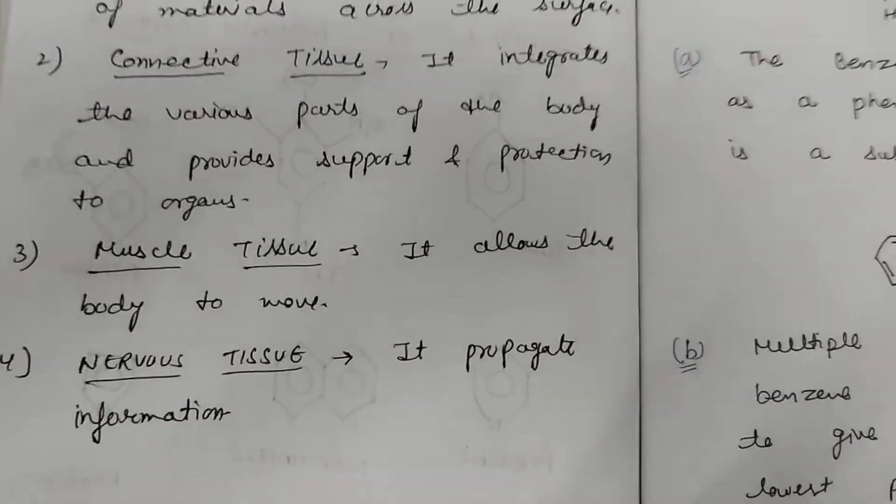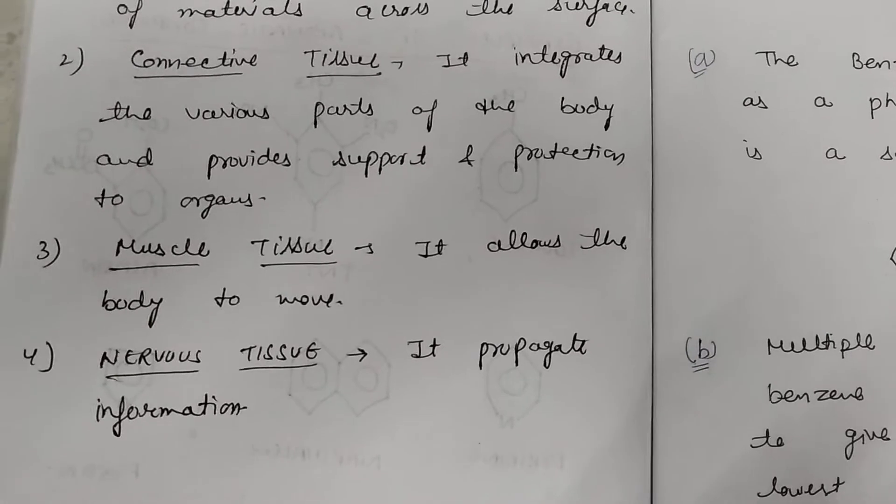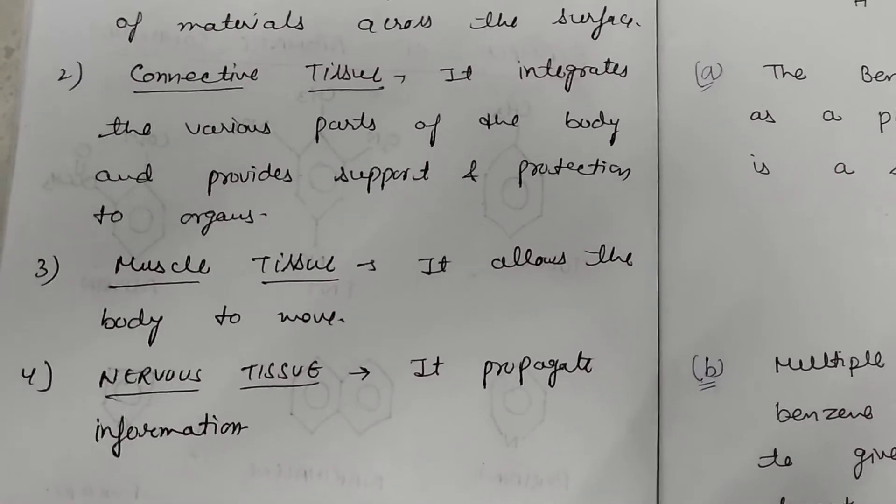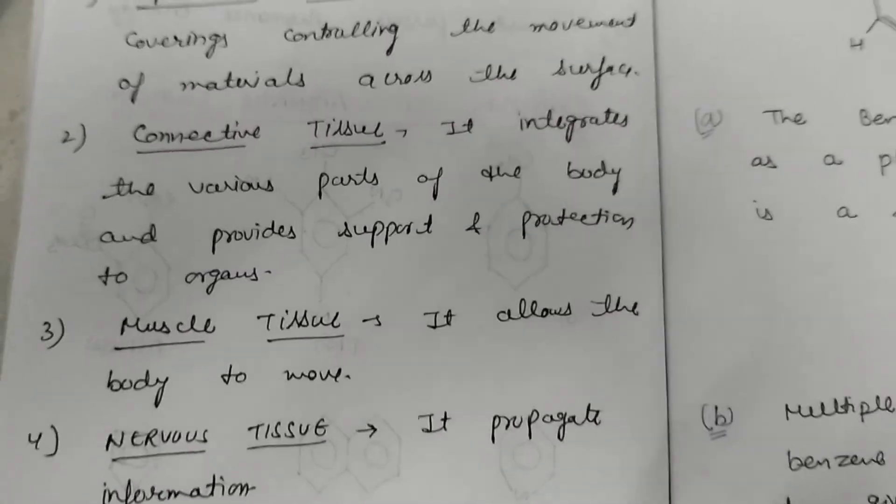Third is muscle tissue. It allows the body to move. Then nervous tissue, it propagates information throughout our whole body.